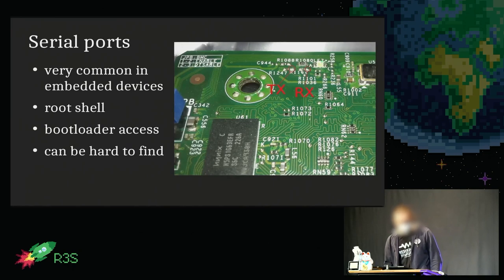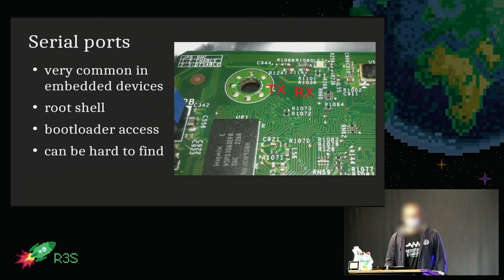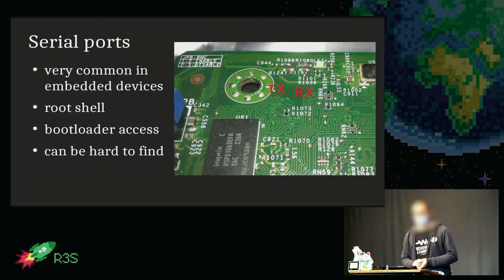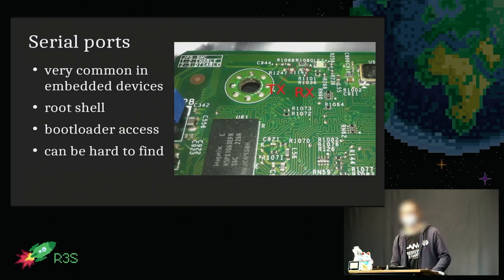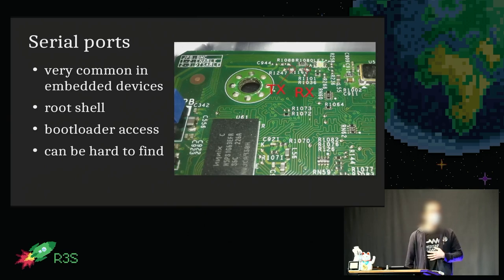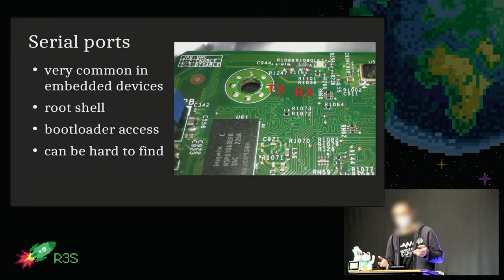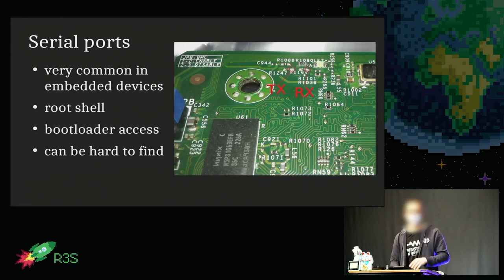The next thing to do is look for serial ports. Most embedded devices you can find have a serial port somewhere. It's very useful, especially in embedded devices that aren't particularly secure — you can just get a root shell if you connect a serial adapter to the right pins. They're usually not populated, so you have to search a bit. In this example, it's two pads of unpopulated resistors — really small, but if you use an oscilloscope, you can find the right signal and find your serial port.